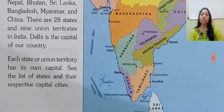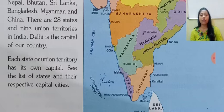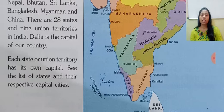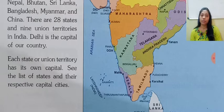There are 28 states and 9 union territories in India. Total 28 states hain aur 9 union territories hain. Delhi is the capital of our country. Each state or union territory has its own capital. Jaise poori India ki ek capital thi, usi tarike se jo hamare 28 states hote hain, har state ki apni ek alag capital bhi hoti hai.